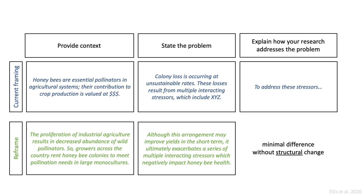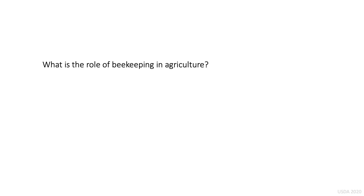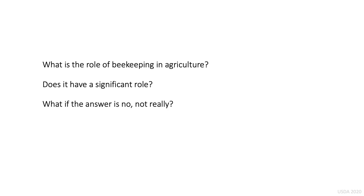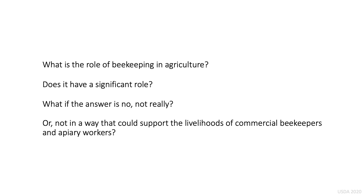This brings us to the dangerous questions. The dangerous questions invite us to reassess the role of beekeeping and honeybee research in agricultural systems. For example, if we acknowledge that industrial agriculture and industrial beekeeping are bad for honeybee health, and we know that our goal is to move towards a food system that supports bee health, then what is the role of beekeeping in agriculture? If we transform agricultural landscapes in the United States so that they support wild pollinators, and those wild pollinators support crop production, then will beekeeping have a significant role? What if the answer is no — or not in a way that could support the livelihoods of the approximately 25,000 apiary workers currently employed in the United States?